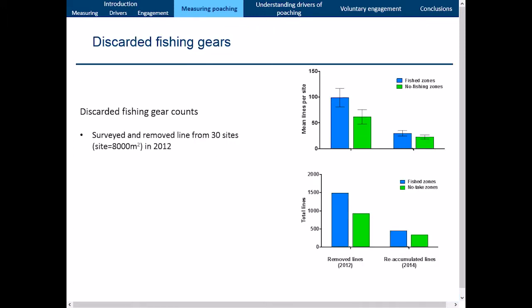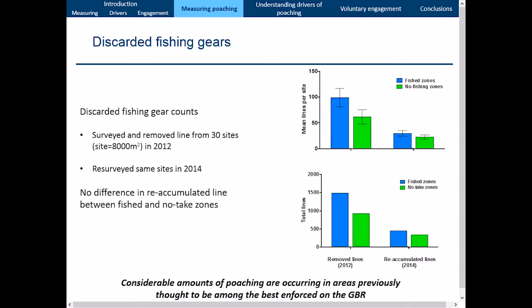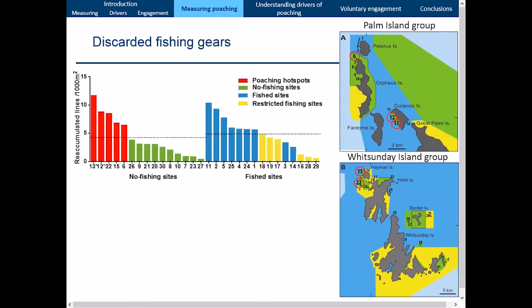First, we looked at discarded fishing gears. We went in in 2012, surveyed and removed line from sites of roughly 8,000 square meters each, then resurveyed the same sites in 2014. We found absolutely no difference in accumulated line between fish zones and no-take zones (p = 0.29). This tells us that considerable amounts of poaching are occurring in areas previously thought to be among the best enforced on the Great Barrier Reef. We then identified poaching hotspots — areas that had re-accumulated line densities higher than the mean for all no-fishing zones — and found five such spots including Iris Point on Orpheus Island, Curacao Island, Palm Island groups, Blue Pearl Bay, and Langford Island.